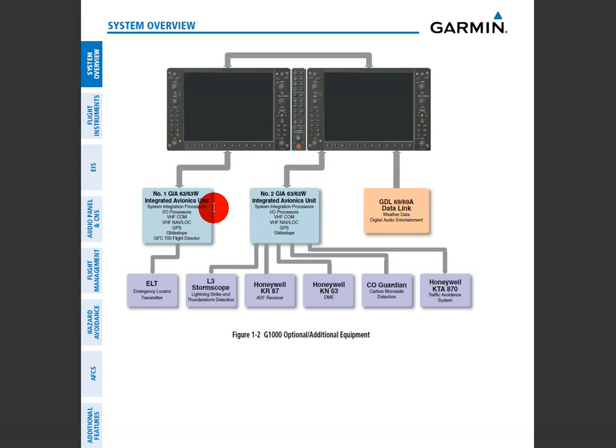That's all there is to it. It's fairly intuitive when you think about it — you can make an analogy to all the systems you'd have in classic analog gauges. The same thing is happening here digitally, except you need to combine everything because it's all going to one screen now, as opposed to individual isolated analog gauges.